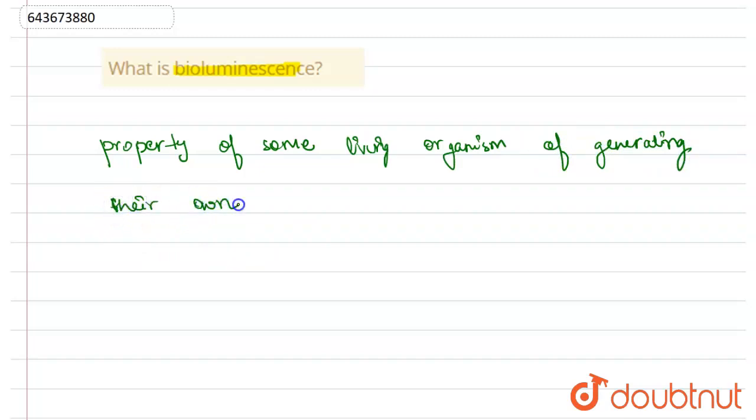So bioluminescence is the property of some living organisms of generating their own light.